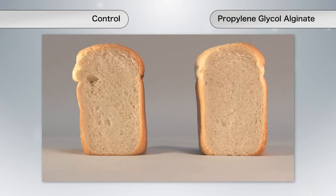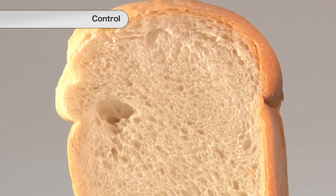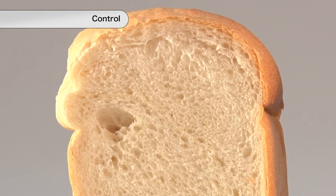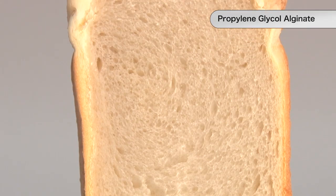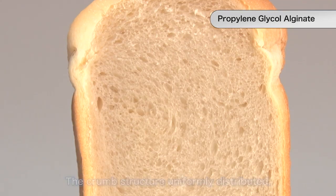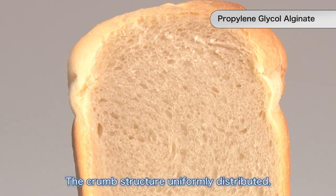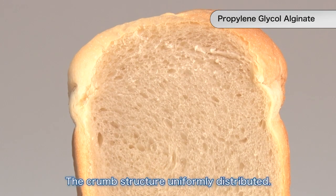Now let's check the bread structure. In the control, we see large air pockets, but in the bread baked with alginate, the crumb structure is uniformly distributed.